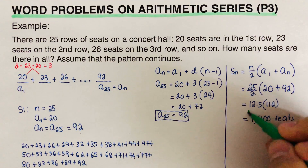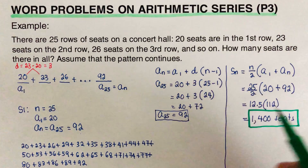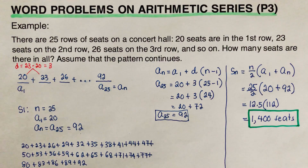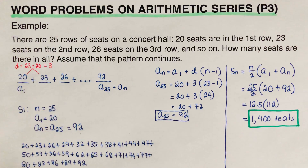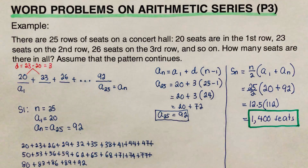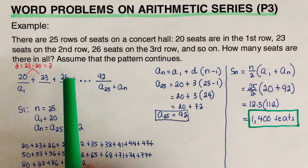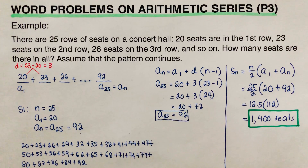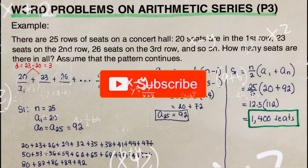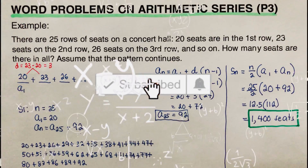All in all, there are 1400 seats total in this concert hall. You could add all the numbers using a calculator, but that takes a long time, especially if there are hundreds or thousands of terms. Using the formula is the fastest way to find the total. That's it — if you find this video helpful, hit like and subscribe for more math videos. See ya!